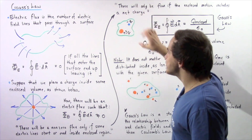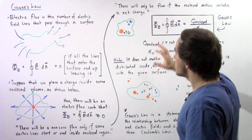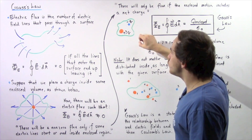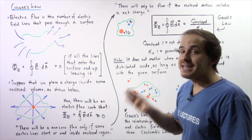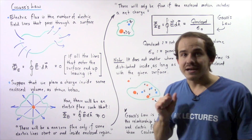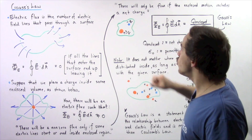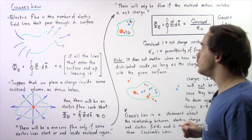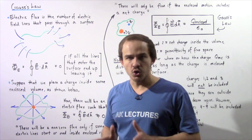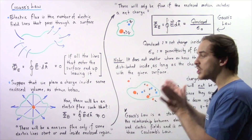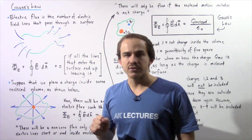Let's suppose we have a region where the charge is distributed unevenly. We have a positive 3q charge on one side and a negative q charge on the other side. The net charge enclosed in this region is negative q plus positive 3q, which gives us a net charge of positive 2q. Because we have a net charge, we will have a non-zero electric flux.